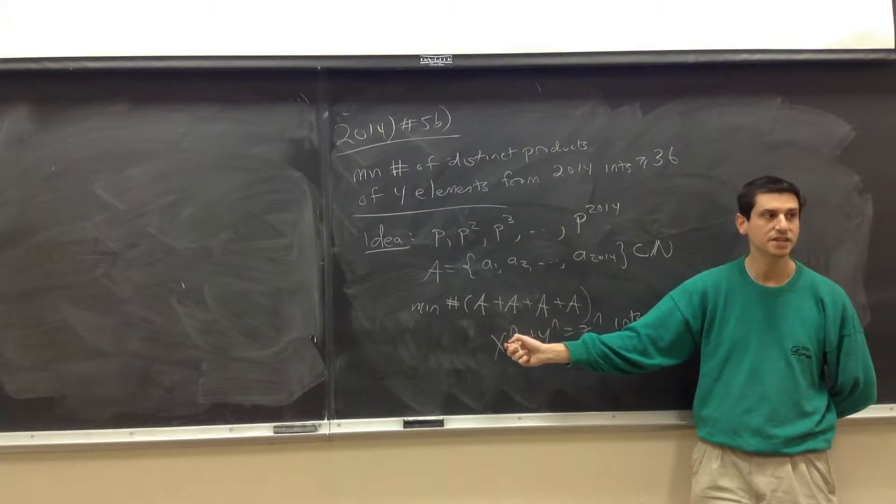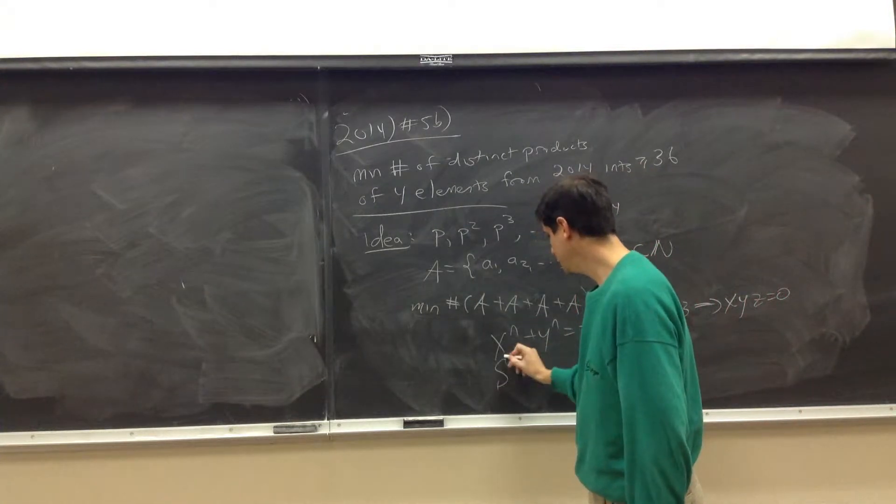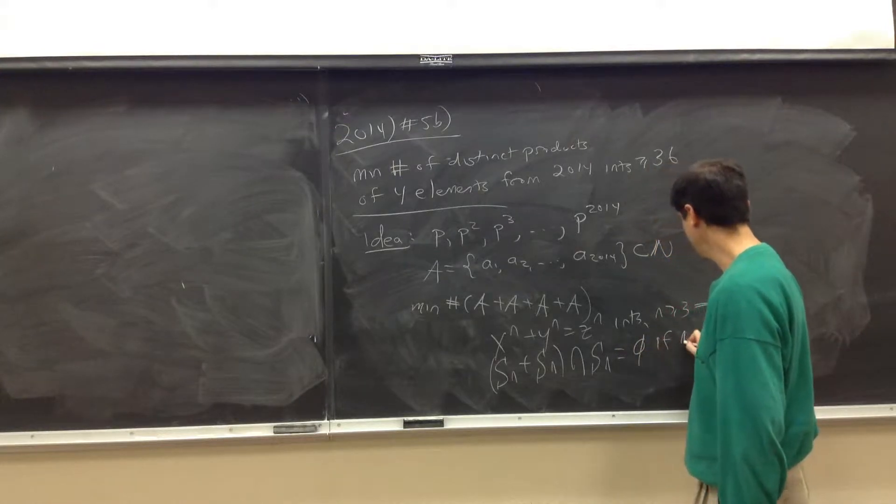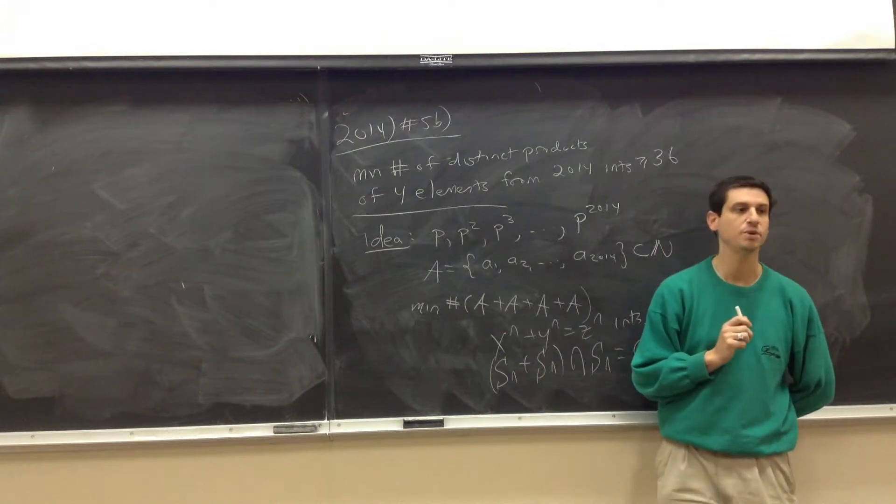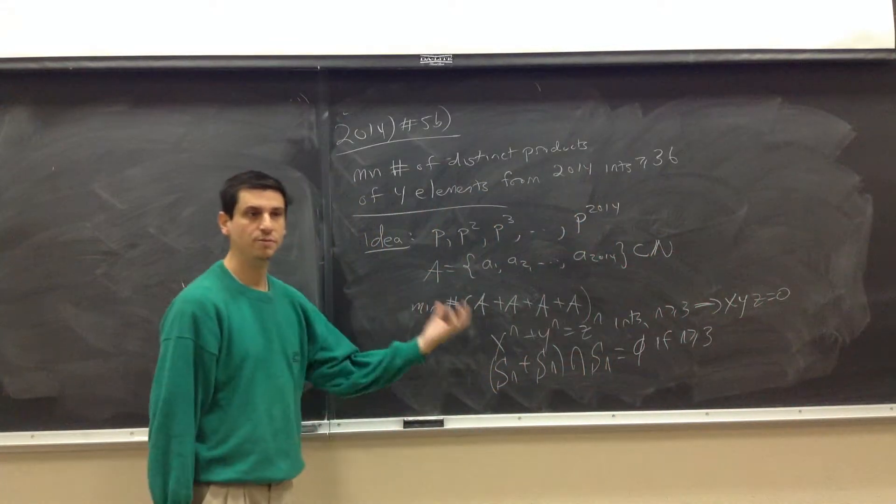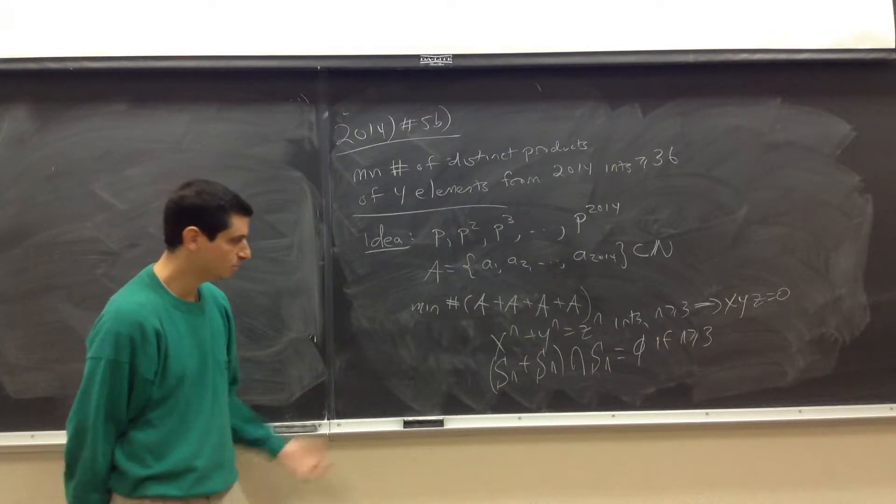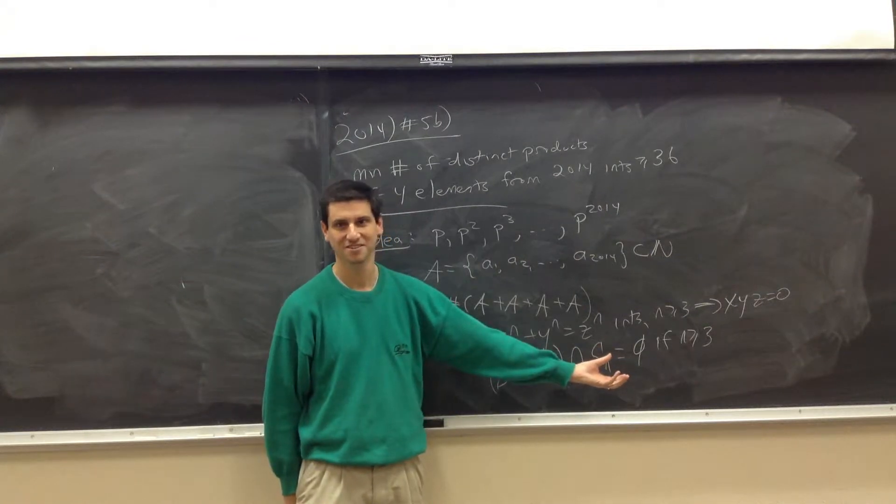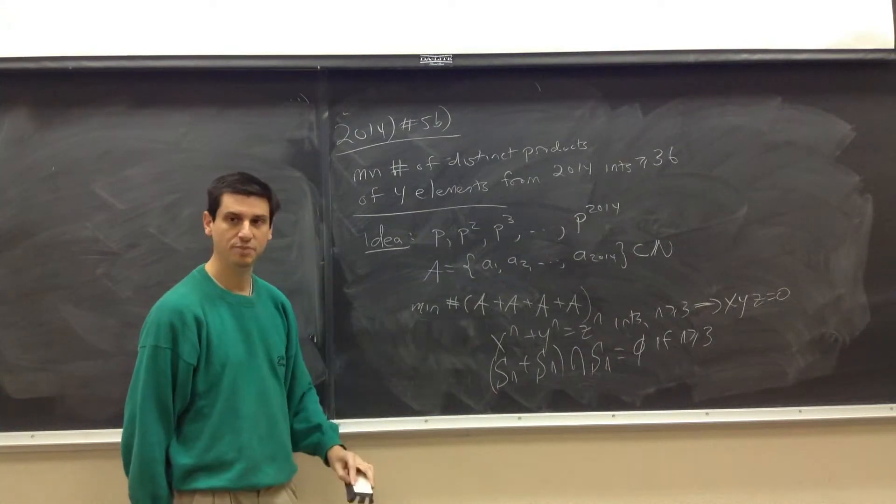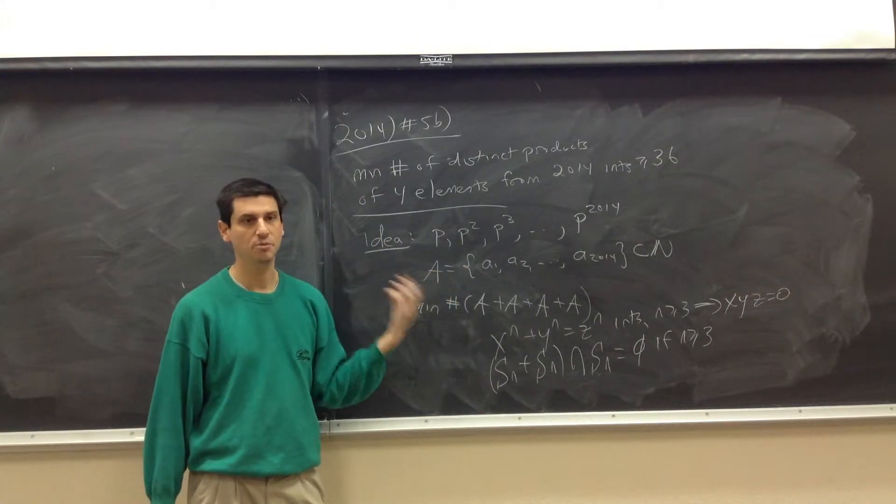And then the question becomes, how should you choose those numbers to minimize the number of possible sums of four elements? What we really have is we have some set A is A1, A2, A2014, contained in the natural numbers. And we want to minimize the cardinality of the set of A plus A plus A plus A.